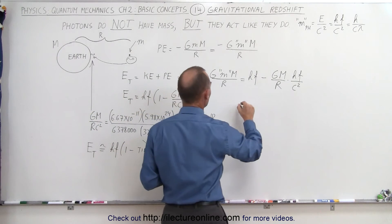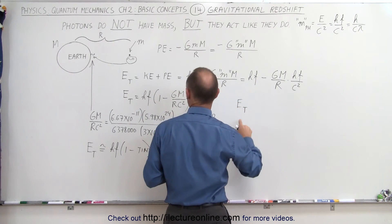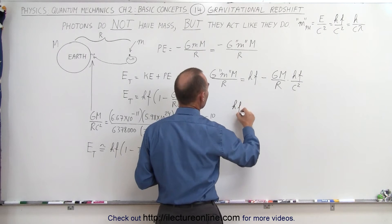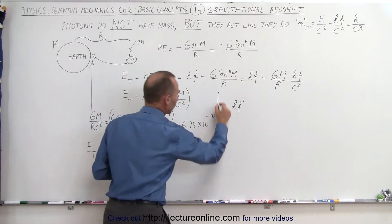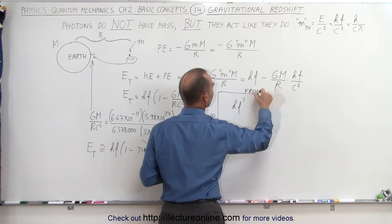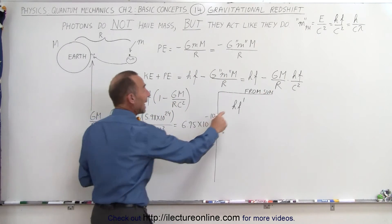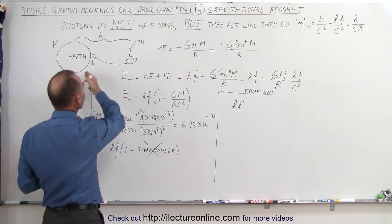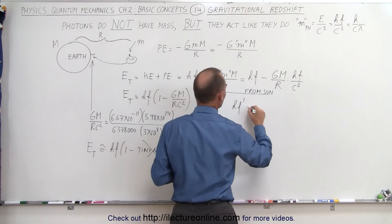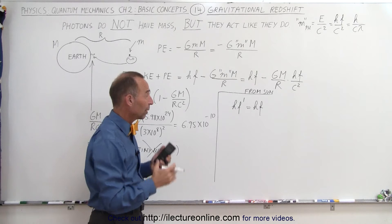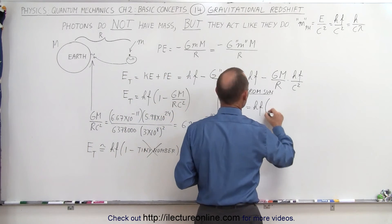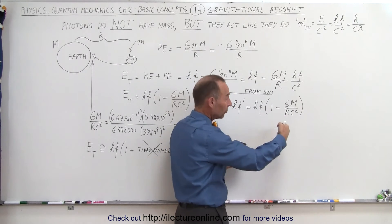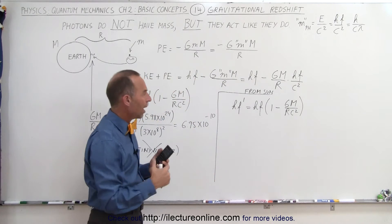The energy of the photon by the time it reaches us from the sun will be h times f prime — a smaller frequency, therefore a longer wavelength — because some energy has been lost escaping the gravitational pull of the sun. That equals the original energy hf at the surface of the sun, times (1 minus GM over rc squared), where r is the distance from the sun to us and M is the mass of the sun.